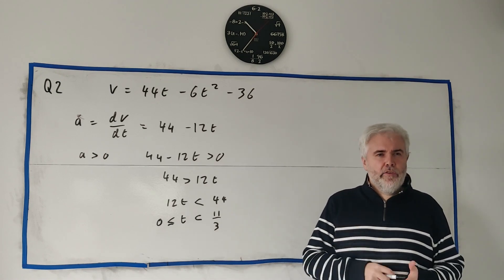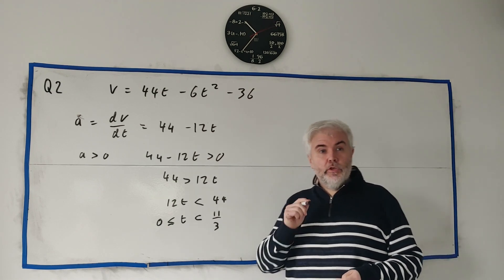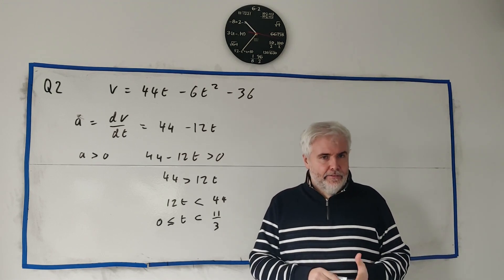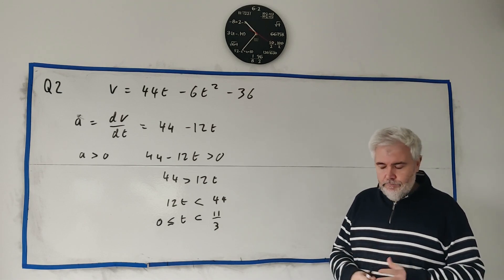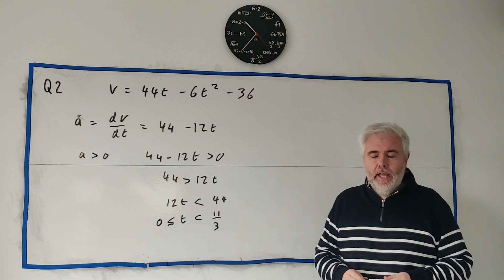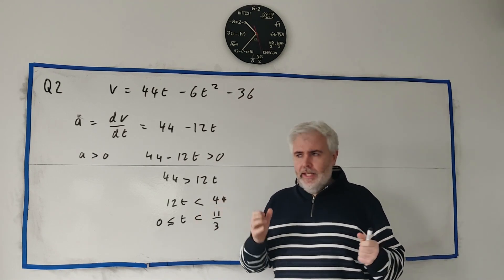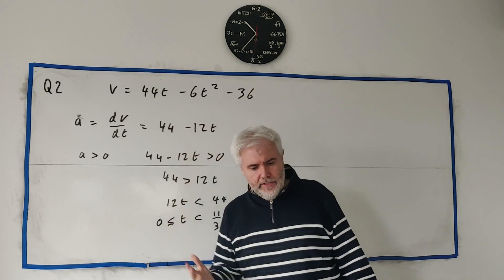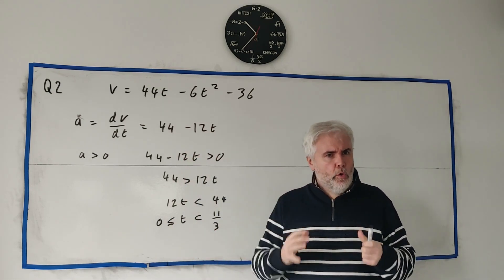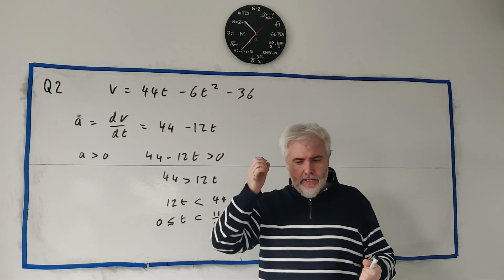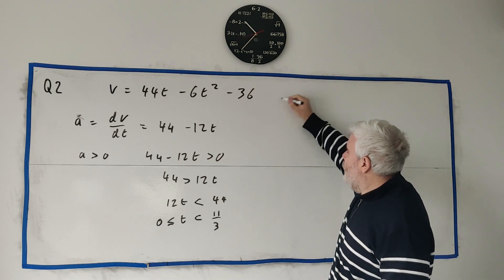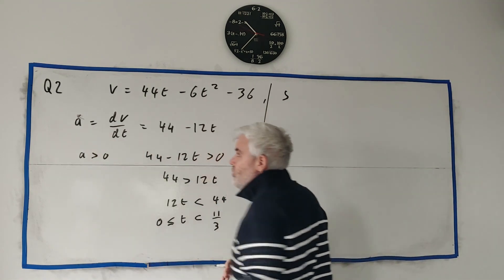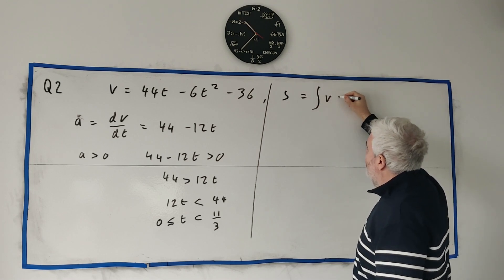Next, they ask to find the two values for t at which p returns to the origin, returns to O. The maths of this question isn't that difficult, but I think a lot of students would have got stuck on this. What on earth are they asking? So they're asking returning to a certain point. That's not acceleration. Acceleration tells us the rate of change of velocity. Velocity tells us speed. If we want to know about where we are, we need a distance, we need a displacement. And that's s. So we need to find s.